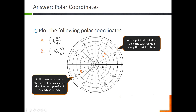The second one is a little trickier: negative five comma pi over six. That means we want to be on the fifth circle — the circle of radius five — but we want to go in the opposite direction of pi over six. Pi over six is in the first quadrant, so the opposite direction puts us in the third quadrant, on the seven pi over six angle line. So point B is on the circle of radius five, but in the opposite direction of pi over six.